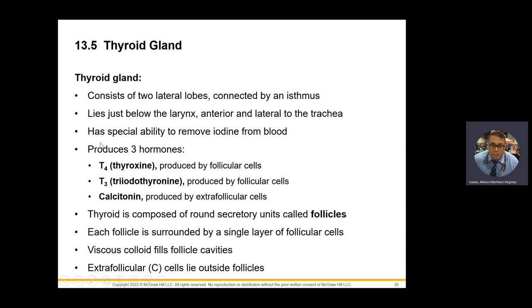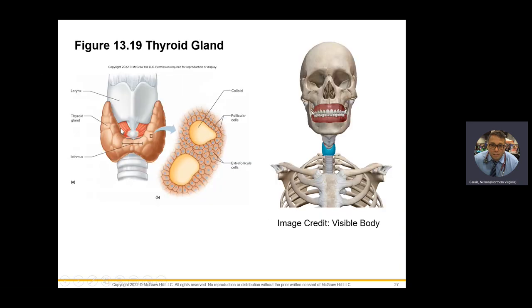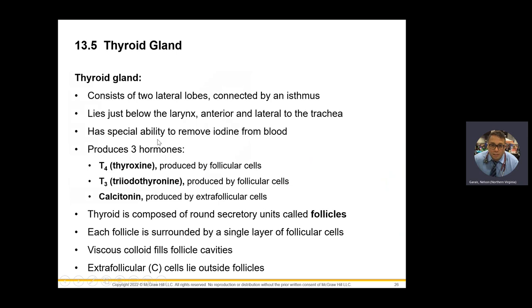Thyroid gland — it has lateral lobes like little fat wings just below your larynx or voice box. It produces T4 and T3, and calcitonin, which deals with calcium — calcium production and calcium tonicity. Think metabolism and heart rate when you think T3 and T4.